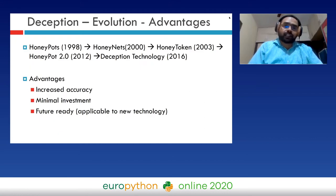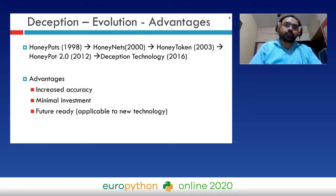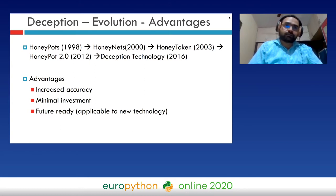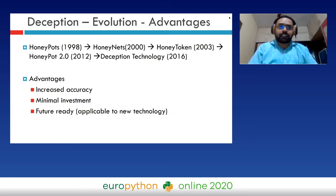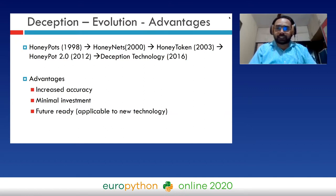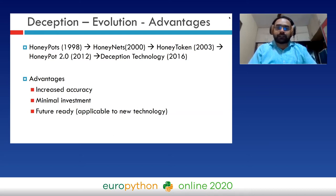Looking at deception's evolution: honeypots were introduced in 1998 — they are small traps in the network. Honeynets, which are networks of honeypots, were introduced in 2000. Honey tokens are small pieces of information embedded in real information; when somebody steals the real information, this token alerts the system administrator about what was stolen and how. Honeypot 2.0 was introduced in 2012, and deception technology came into existence in 2016. Advantages of deception include increased accuracy, minimal investment, and being future-ready — applicable to both new and existing technology.